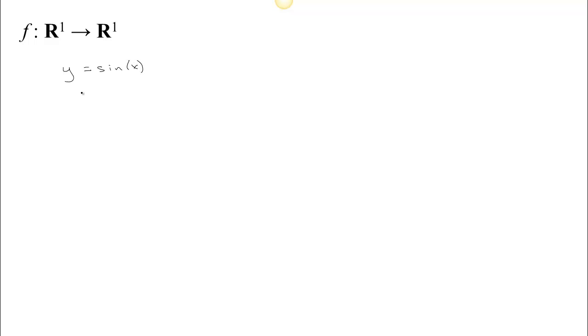This is the case you're most familiar with. If I were to write a function like y equals sine x, or f of x equals sine x, this is a scalar-valued function of a scalar. It's scalar-valued because a scalar comes out, and a function of a scalar because a scalar goes in. This is a non-linear function, but if you want a linear one, maybe f of x equals 2x would be an example.